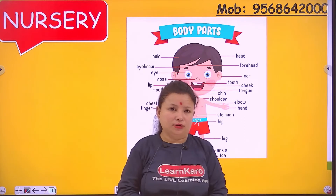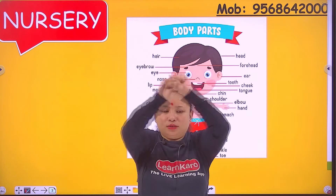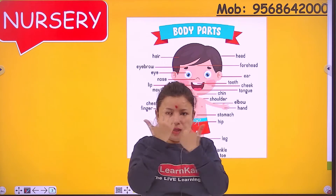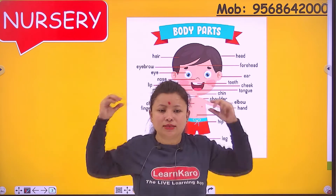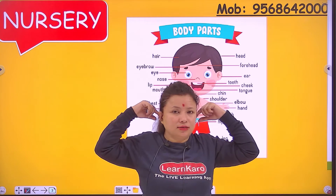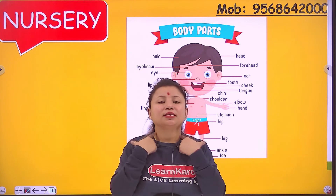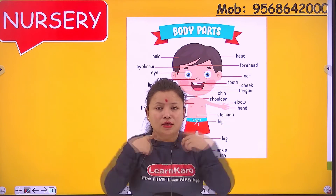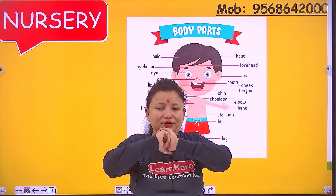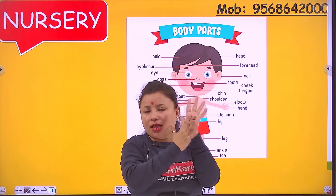Okay, now give me the answers. How many hands do you have? One and two. How many eyes do you have? I have two eyes. How many ears do you have? I have two ears. What is this? Shoulder. This is neck. How many fingers do you have? Ten fingers. What is this? Palm.